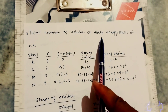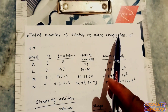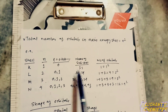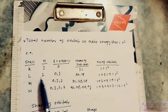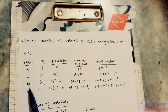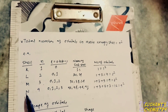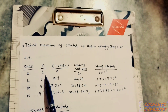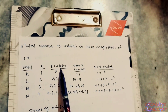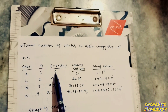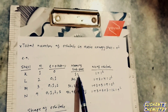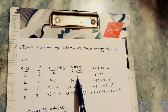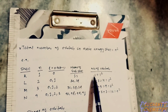The total number of orbitals in a main energy shell (K, L, M, N) equals n². The K shell contains one orbital, the L shell contains four orbitals, the M shell contains nine orbitals, and the N shell contains 16 orbitals. For the K shell, n equals one; putting one in the formula gives l equals zero, so the K shell has only the 1s subshell with one orbital.